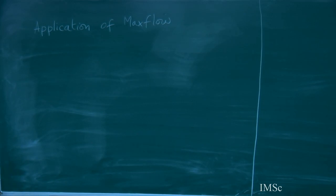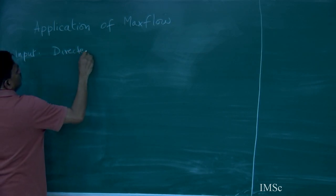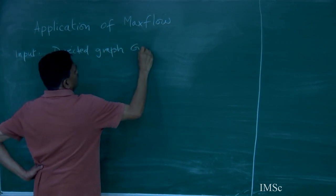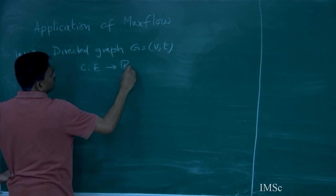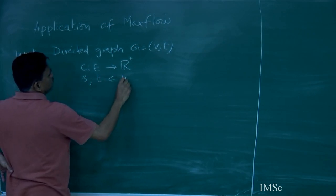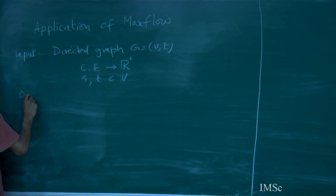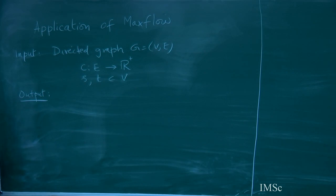Recall first what the MaxFlow problem is. You are given a directed graph, then you have capacities on the edges. In the more general case they are real numbers, but some positive capacities let us say. And there are two specific vertices s and t — what do we want? We want what is called a flow. What is a flow? How do you formally define what a flow is?